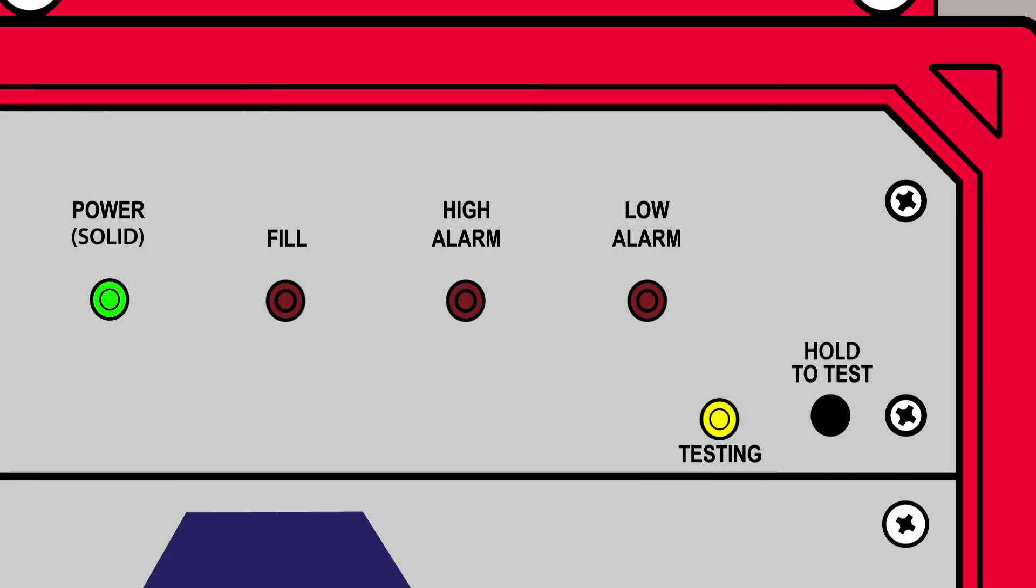Each switch will turn on the LED, the remote fire panel connection, and the high-voltage respective relay. Once testing has completed, the power alarm LED will flash five times, turn green, and the yellow test light turns off.